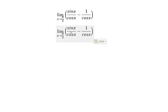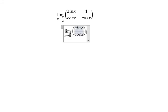Because we have cos x and cos x, we just put sin x minus 1 over cos x. If we put π/2 in sin x and cos x, you will get 0 over 0, so you can use L'Hospital's rule.